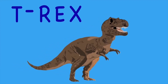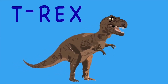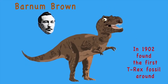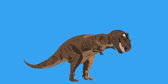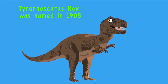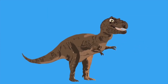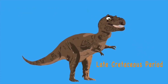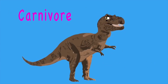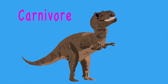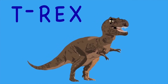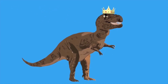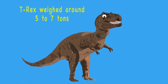It's the T-Rex, a top carnivore — king of the dinosaur! A paleontologist named Barnum Brown found the first T-Rex fossil around 1902. Tyrannosaurus Rex was named in 1905 by Henry Fairfield Osborn. King of the tyrant lizards is what T-Rex means. In the late Cretaceous period, it roamed the earth as a carnivore and may have hunted in a pack according to some new theory.